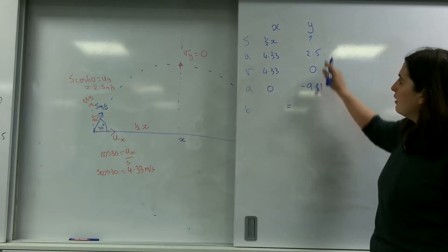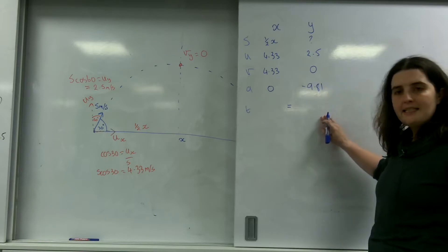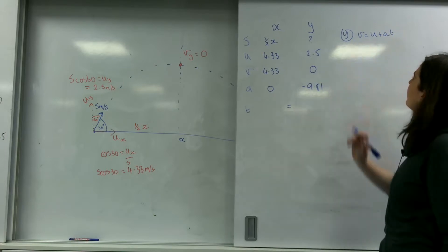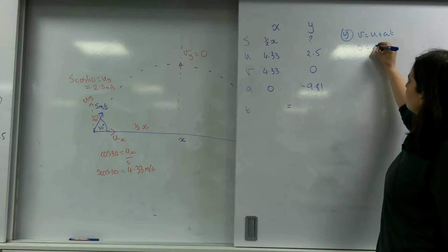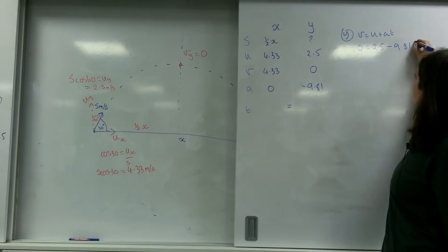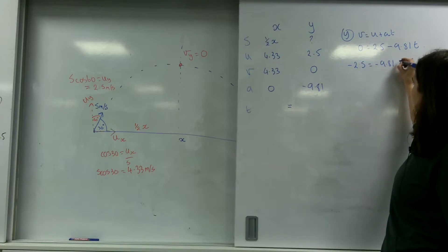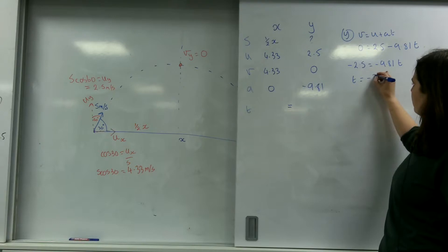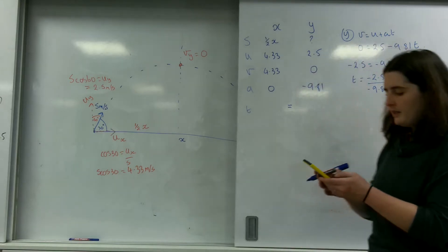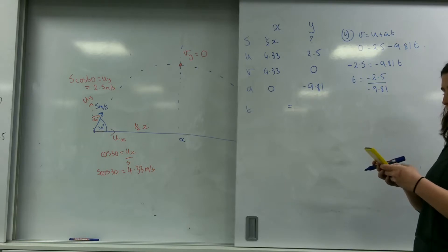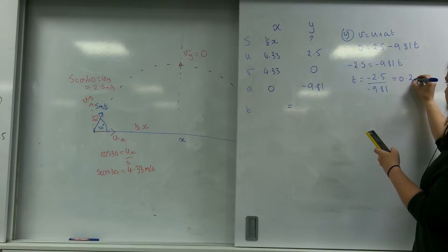So let's find my time. V, U... I've got V, U, and A, and I need T. So I'm going to use V equals U plus A, T. And I've put Y here because I know what axis I'm working in. So I've got 0 equals 2.5 minus 9.81 T. So minus 2.5 equals minus 9.81 T. So T equals minus 2.5 divided by minus 9.81, and that's going to be 0.25 seconds.